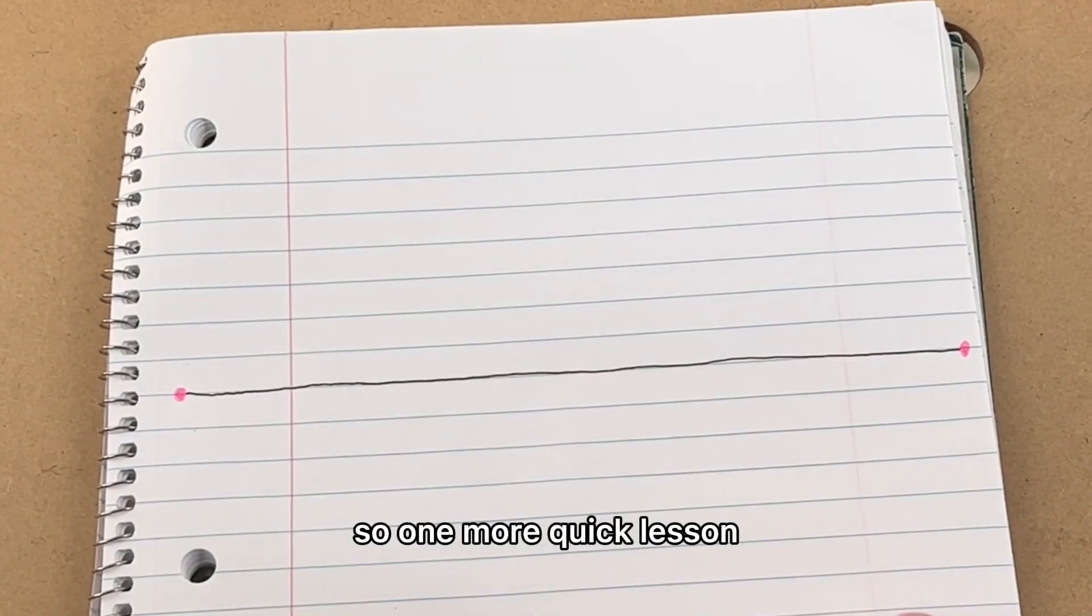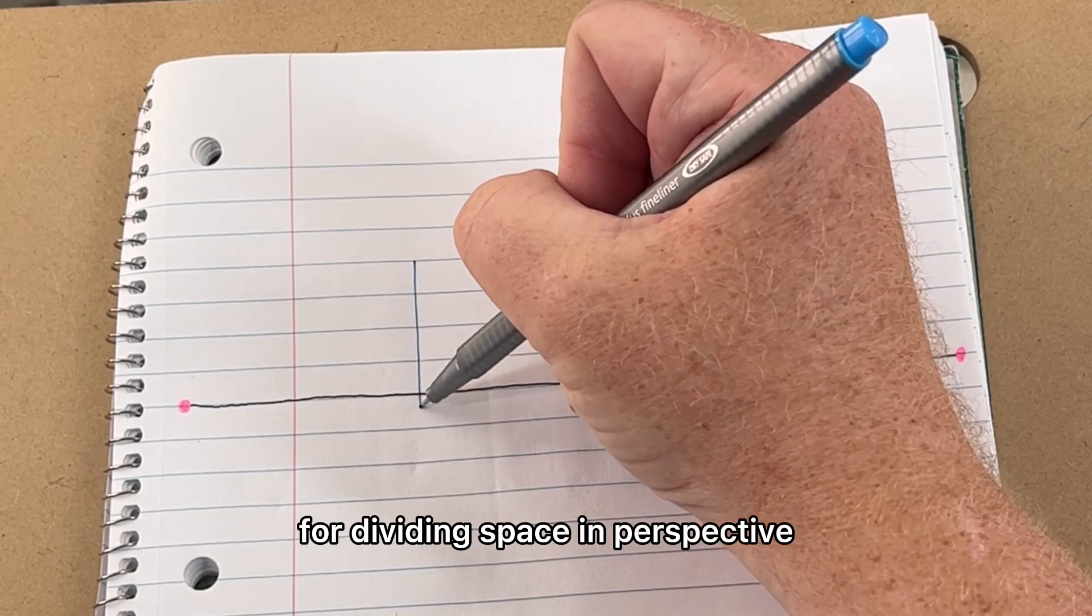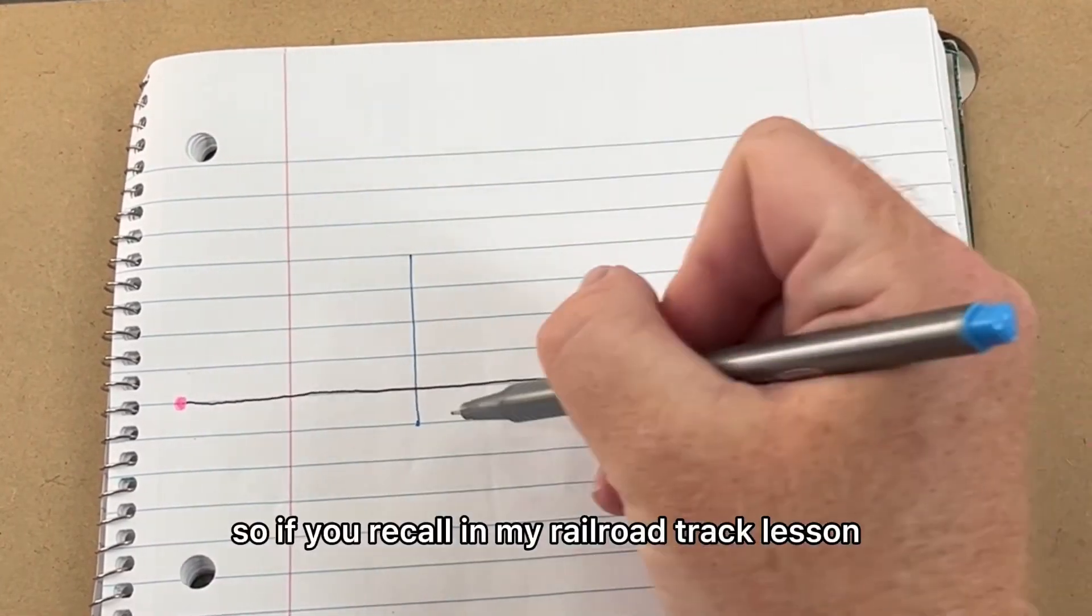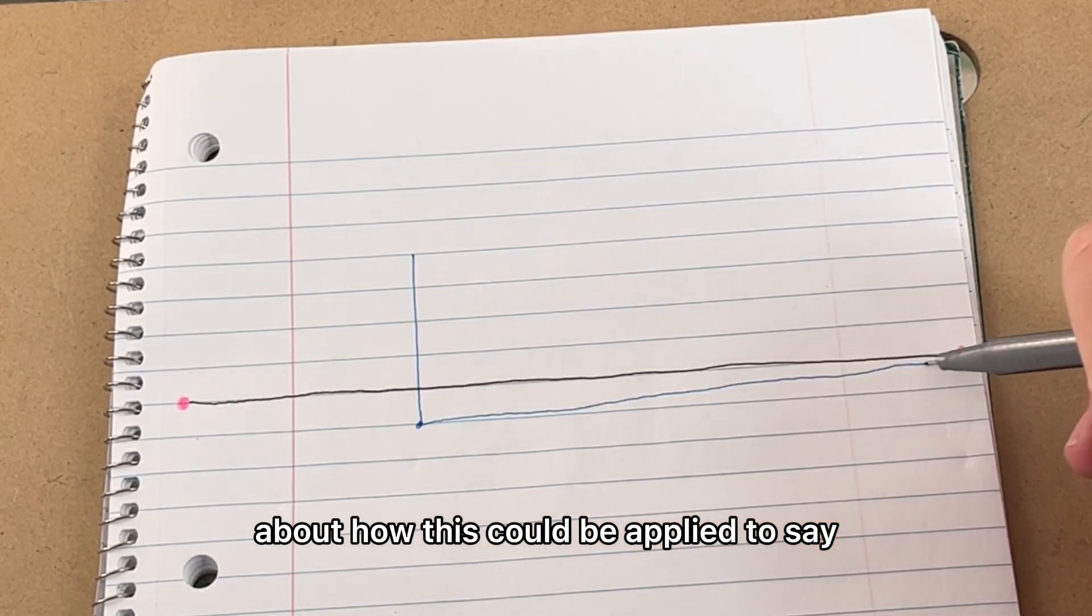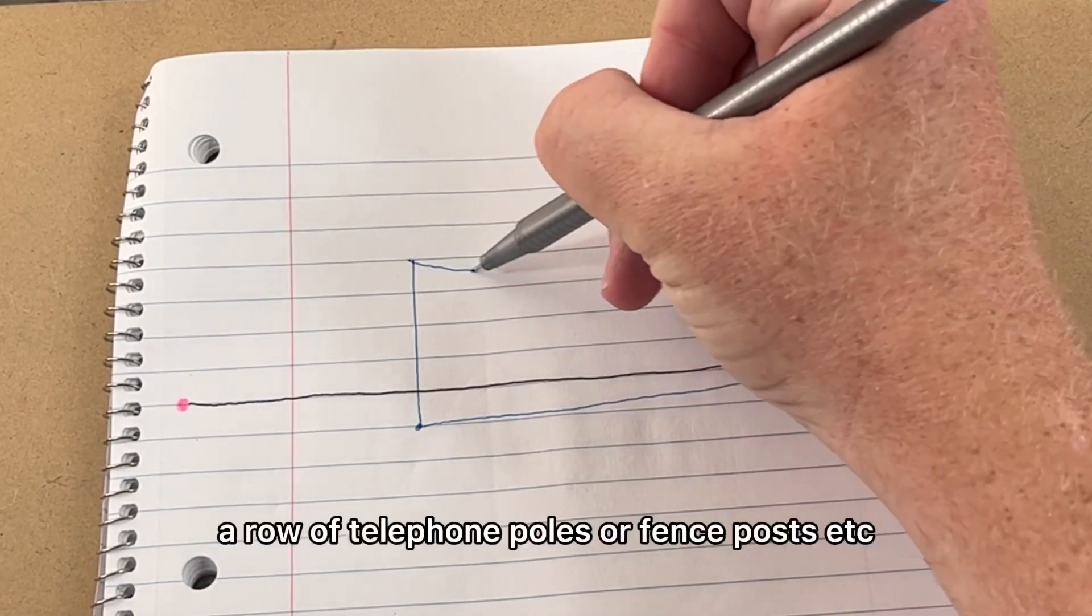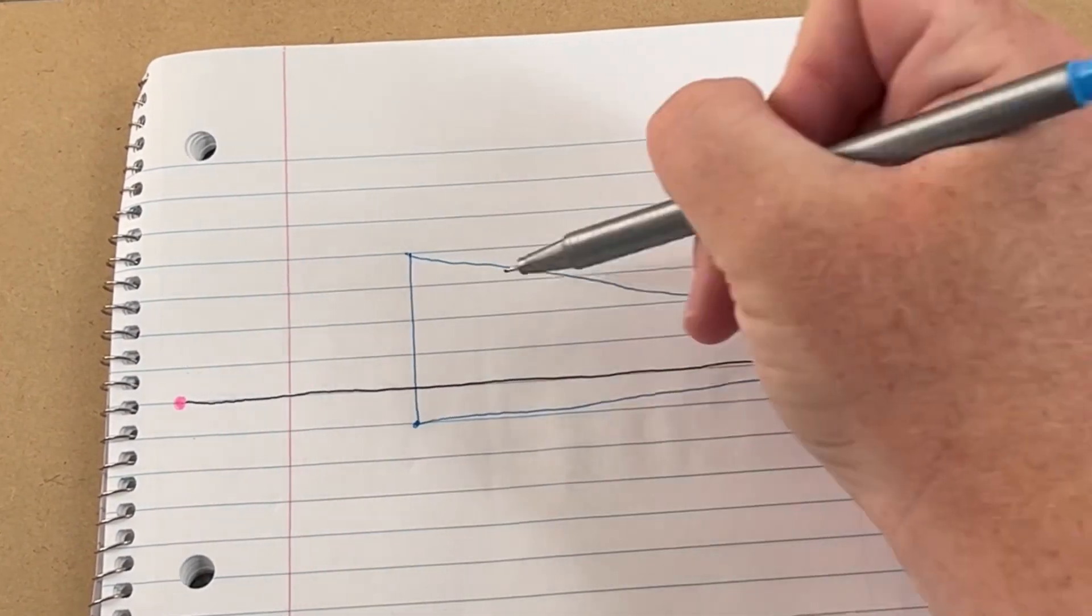One more quick lesson to go over how important the X method is for dividing space in perspective. If you'll recall in my railroad track lesson, I got a lot of questions about how this could be applied to, say, a row of telephone poles or fence posts. How would you do this?